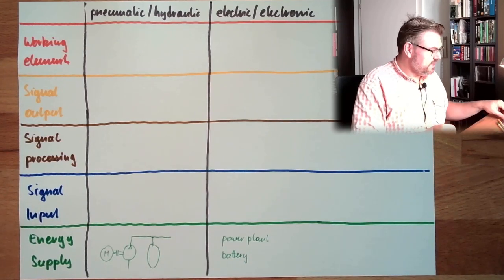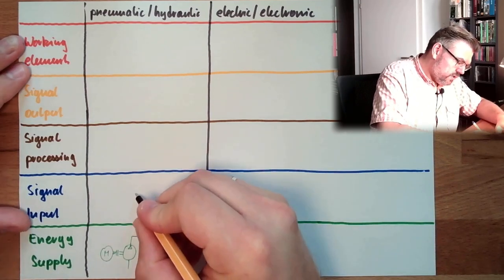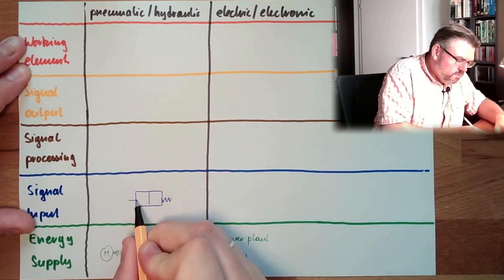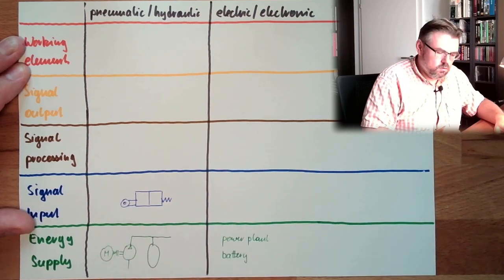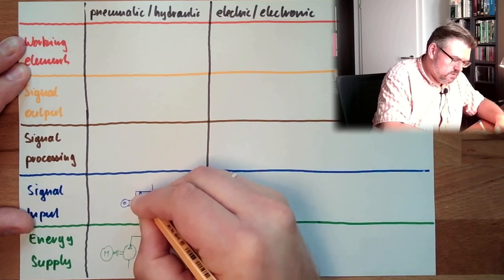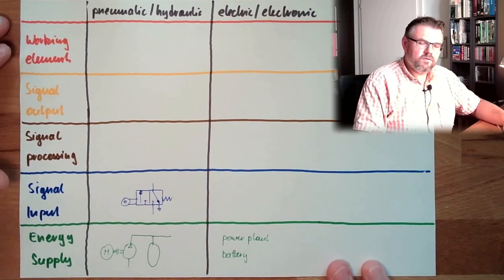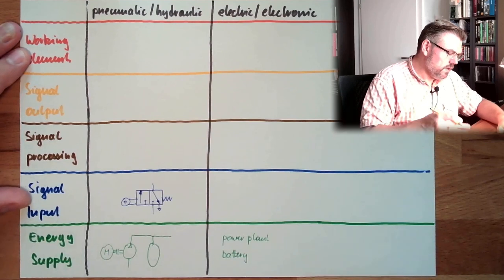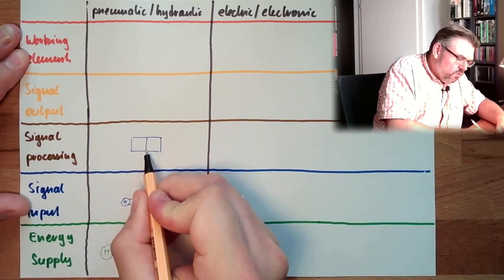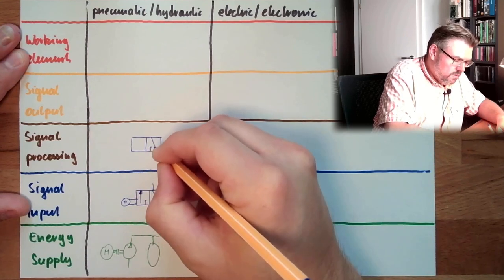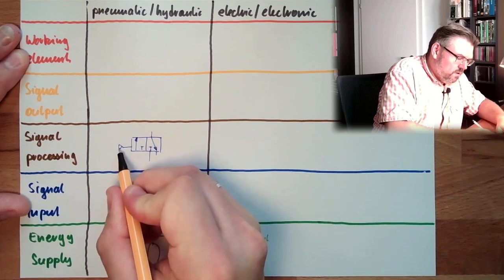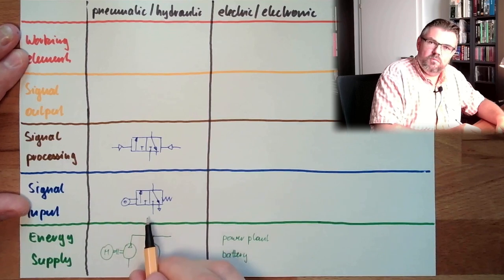Signal input. What would be the signal input of a pneumatic or hydraulic? This usually is some sort of valve, a wave valve, with a special form of operation, maybe a roll. Maybe something like this, a two-three wave valve, roll-operated, okay?